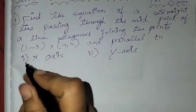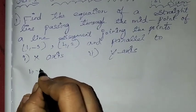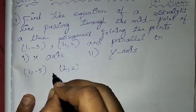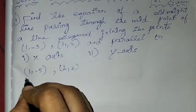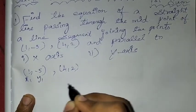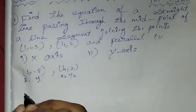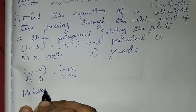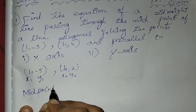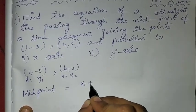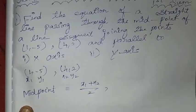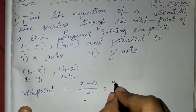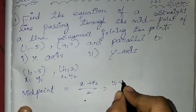So let me find the midpoint of these two points: (1, -5) and (4, 2). Let me take them as x1, y1 and x2, y2. We all know the midpoint formula — that is (x1 + x2) / 2, (y1 + y2) / 2.